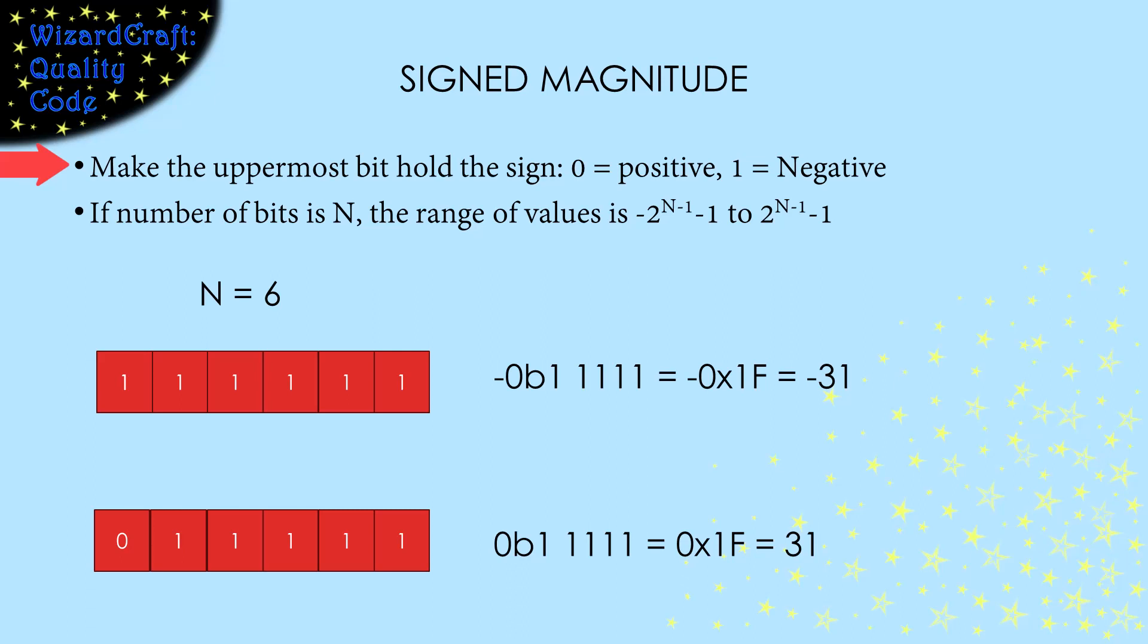That's why this is named signed magnitude. Here you can see the most negative and most positive numbers that we can represent. So the range is negative 2 to the n minus 1 minus 1 through 2 to the n minus 1 minus 1.